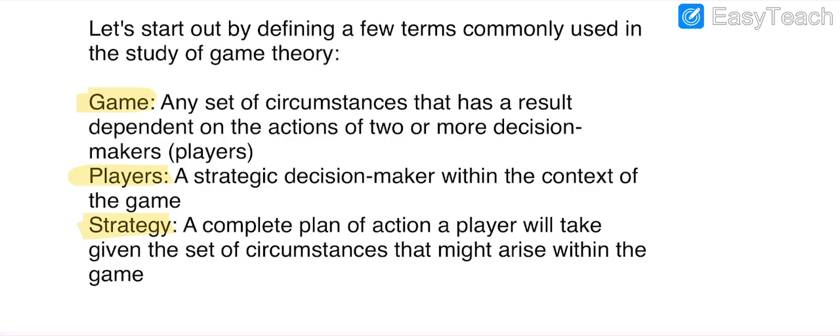Before starting the topic in detail, here are a few terms you must know. First is game. What is game? In game theory, any set of circumstances that has a result dependent on the actions of two or more makers—makers means players, two or more makers. In this game, two players may be involved or more than two players may be involved.